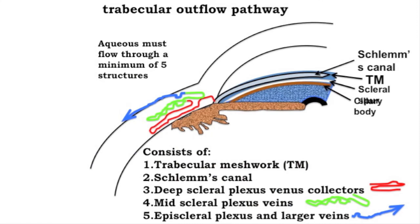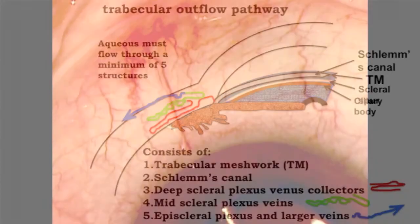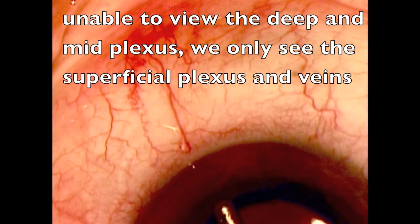For the trabecular route, aqueous must pass successively through five key locations, including trabecular meshwork, Schlemm's canal, the deep plexus in red, the mid-scleral plexus in green, and the superficial scleral plexus in blue. We can visualize three of those five sites by gonioscopy and slit lamp exam, but we are unable to see the deeper mid-scleral plexus because it is buried in the sclera.